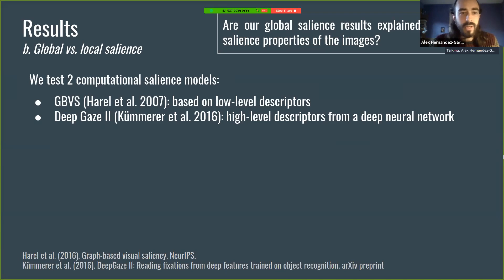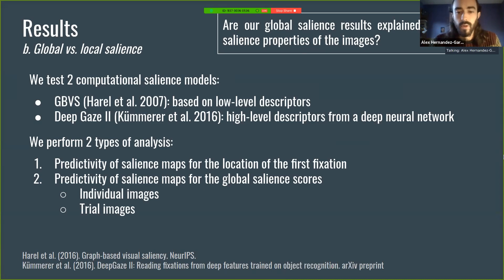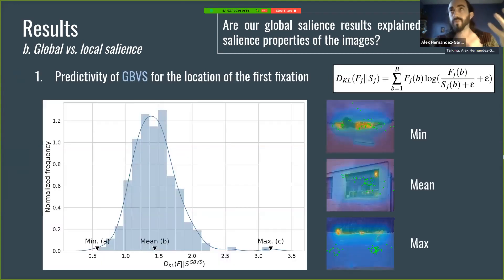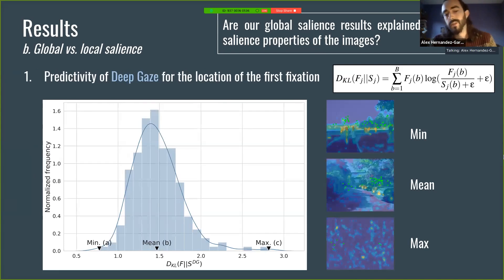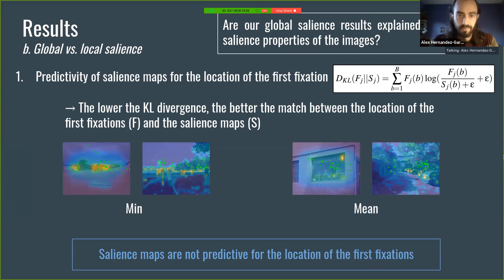We performed two types of analysis. One was to check the predictivity of salience maps for predicting the location of the first fixation. We computed the KL divergence between the first-fixation maps and the salience maps from the computational models. We observed that for both GBVS and DeepGaze the divergence was larger than zero — if it were zero, it would mean first fixations correspond to high-salience areas, but that was not the case. So salience maps were not predictive for the location of first fixations.